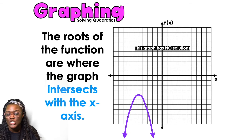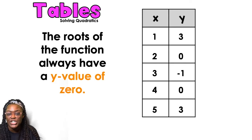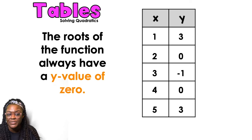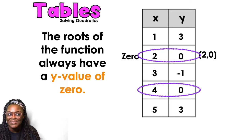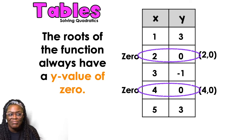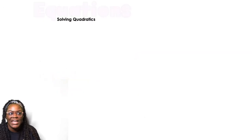This last graph does not touch the x-axis at all, so it has no solution, no x-intercepts, no roots, no zeros. Now let's talk about tables. The roots of a function always have a y-value of 0. So wherever you see a zero in your table — like (2, 0) or (4, 0) — that tells you that's a root, a solution, an x-intercept. All of those mean the same thing.